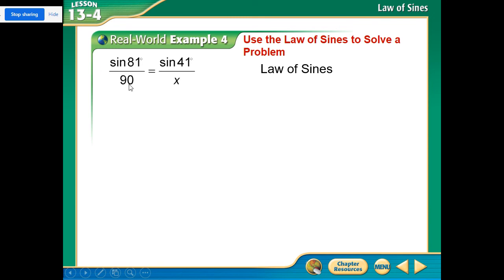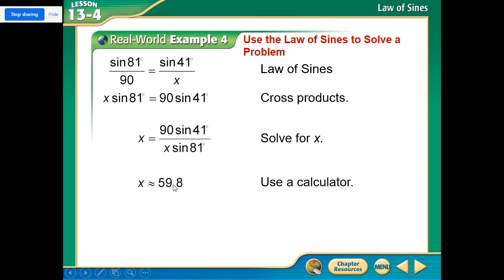So sine of 81 over 90 equals sine 41 over X, and we're just cross-multiplying. When we go ahead and we do that, we get 59.8, and so that is our value or distance between where he caught it and second base.